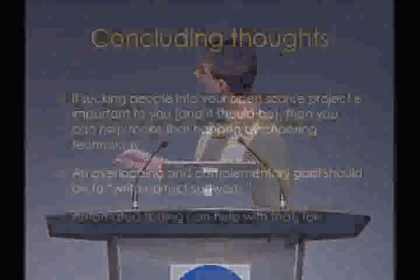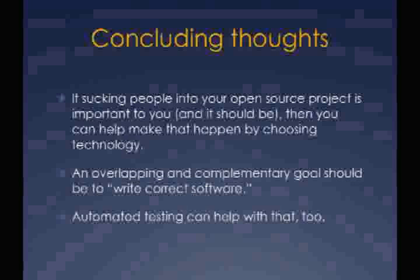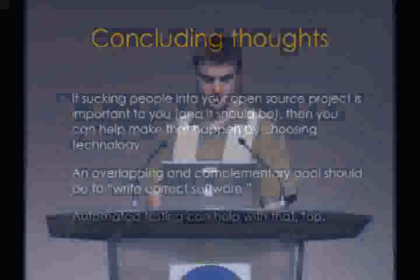Concluding thoughts: if you want to attract people to your open source project, you can help make that happen by choosing technology appropriately. What it comes down to is: use an open project hosting site, and for the love of God, use distributed version control systems. An overlapping and complementary goal — write correct software, which is much harder — but I think automated testing can help with that, as well as having other people use your code.